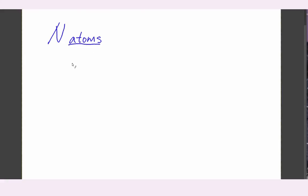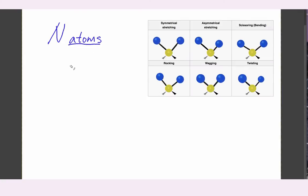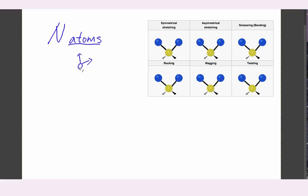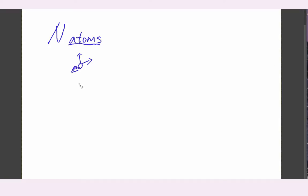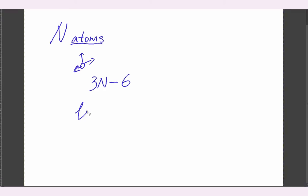If we have a molecule with N atoms, each atom can move in three directions in space, so it could have 3N different vibration modes. However, there are limits described in the textbook. So the total number of vibrational modes is 3N minus 6. However, for the previous slide with CO2, we had four vibration modes.